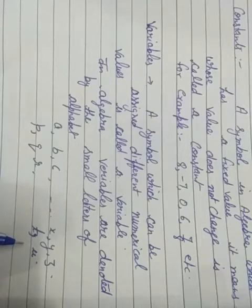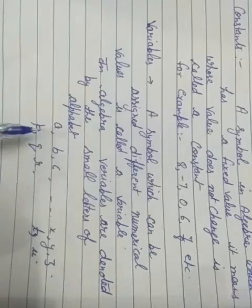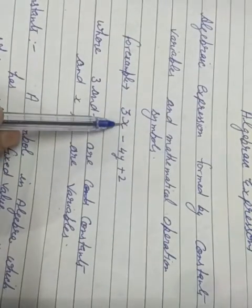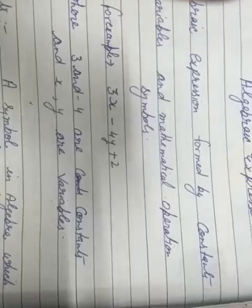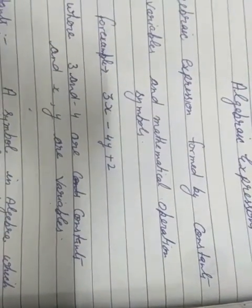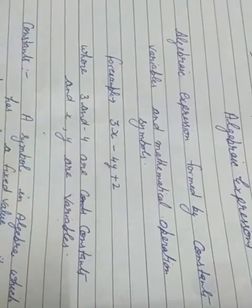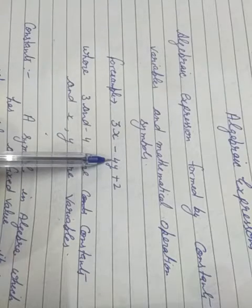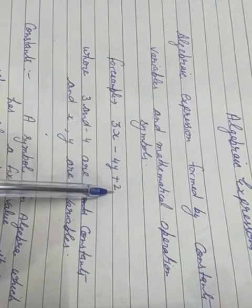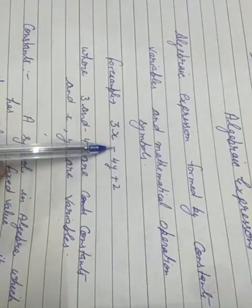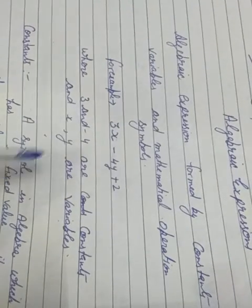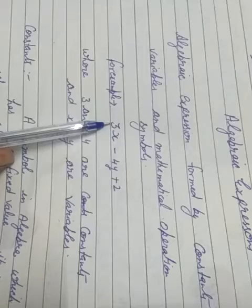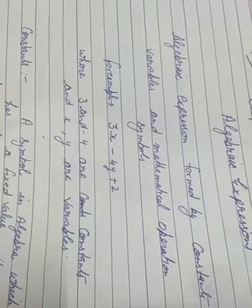We use small letters of the alphabet for variables. For example, in the expression 3X: X is the variable and 3 is the constant value. Minus 4 is the constant and Y is the variable. 2 is also a constant value. The expression is connected by plus and minus signs, and these are called algebraic expressions.